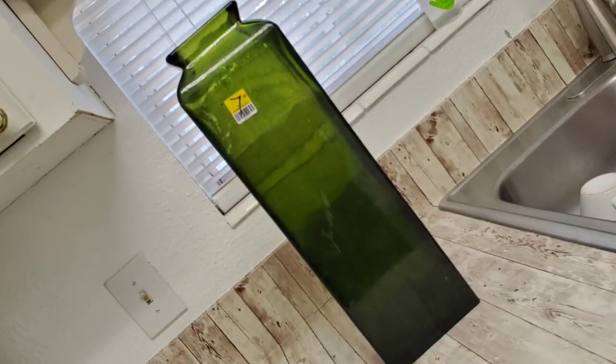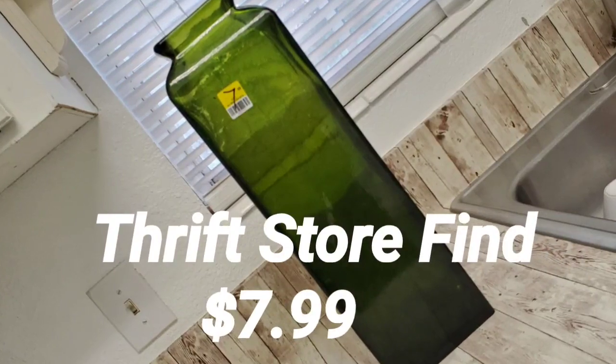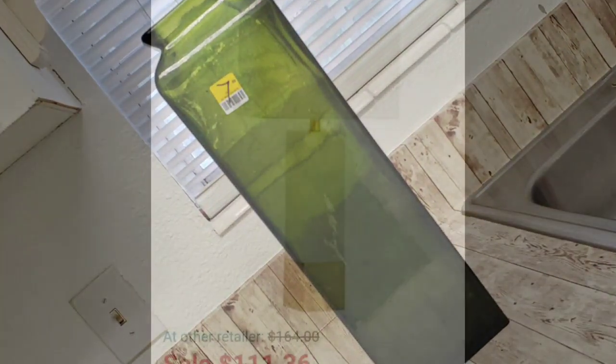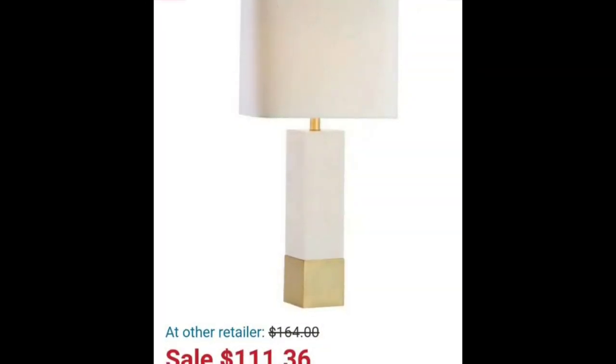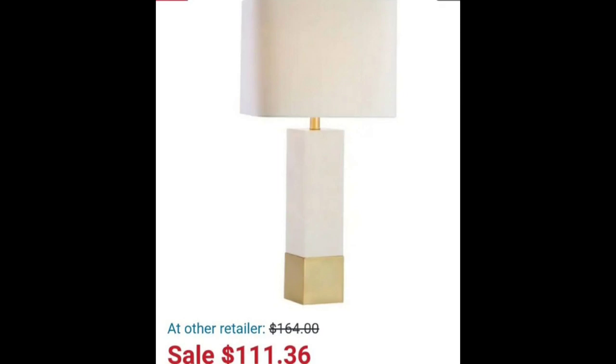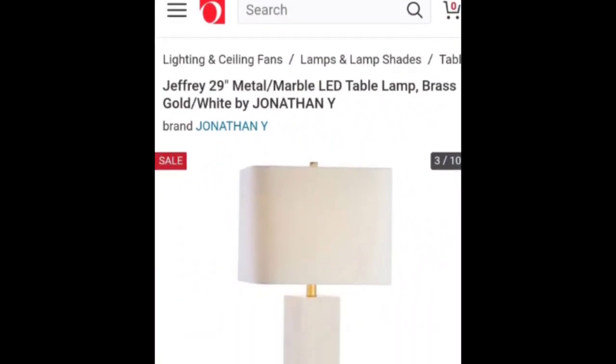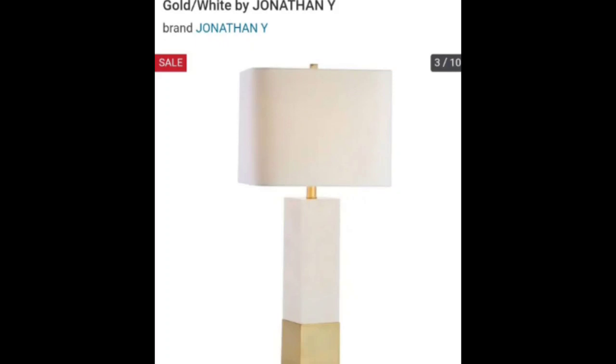If you're interested in seeing what I created, then just keep watching. Let's get started. I purchased this vase from a thrift store for $7.99 and I went online and found this lamp. This is sold by Overstock.com for $111.36, and that's the sale price. The regular price is $164. This is a Jeffrey 28-inch marble metal lamp.